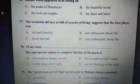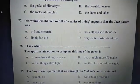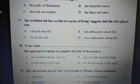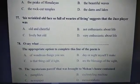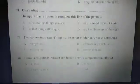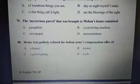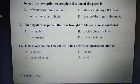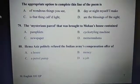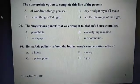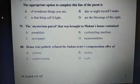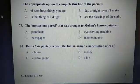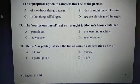Question 78: Oh, say what — dash — the appropriate option to complete this line of the poem is C: Is that thing called light? Question 79: The mysterious parcel that was brought to Mohan's house contained B: Cyclostyling machine. Question 80: Hema Aziz politely refused the Indian Army's compensation offer of C: A petrol pump.